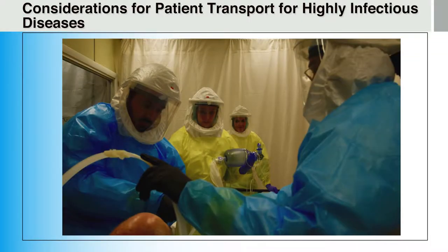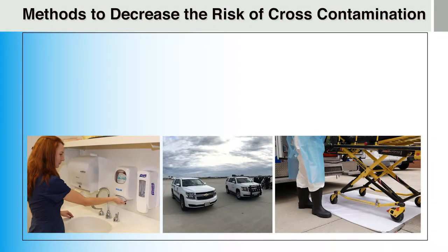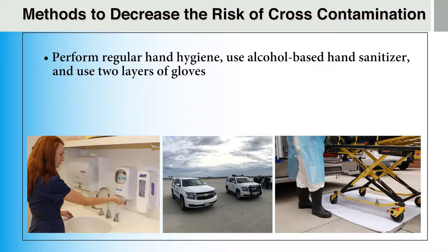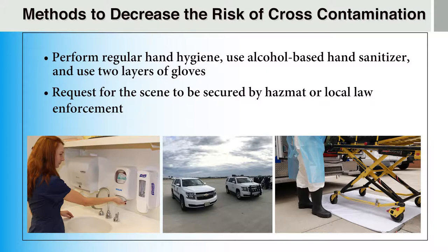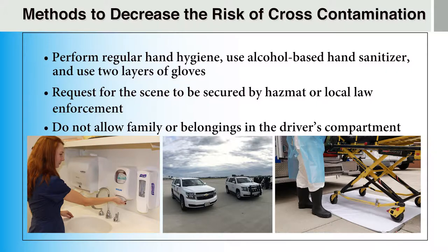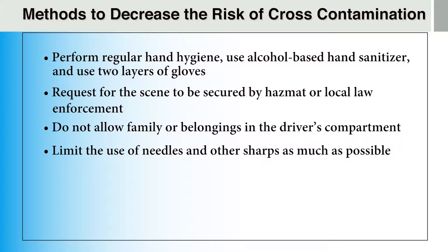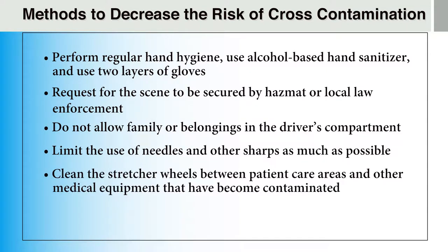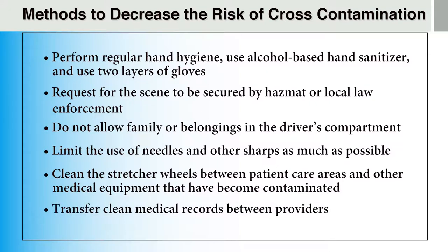Now that we understand the roles of first arriving units and designated transport units, let's discuss some important considerations for patient transport for those with suspected highly infectious diseases. Providers can use the following techniques to decrease the risk of cross-contamination: request for the scene to be secured by HAZMAT and local law enforcement as needed, do not allow family members or patient belongings in the driver's compartment, limit the use of needles and other sharps as much as possible, use appropriate decontamination methods to clean the stretcher wheels between patient care areas, and transfer clean medical records between providers and the hospital.